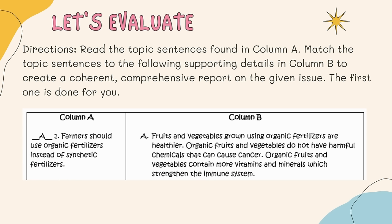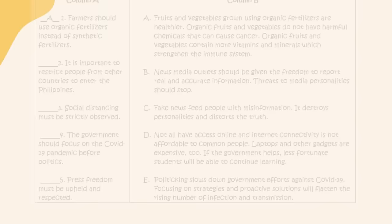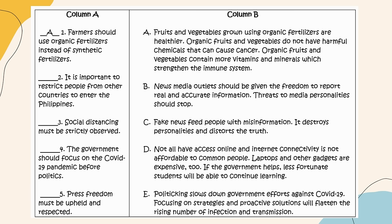Now let's evaluate the given sentences and answer this exercise. Directions: Read the topic sentences found in column A. Match the topic sentences to the following supporting details in column B to create a coherent, comprehensive report on the given issue. The first one is done for you. Number one: 'Farmers should use organic fertilizers instead of synthetic fertilizers.' The correct answer is letter A: 'Fruits and vegetables grown using organic fertilizers are healthier. Organic fruits and vegetables do not have harmful chemicals that can cause cancer. Organic fruits and vegetables contain more vitamins and minerals which strengthen the immune system.'